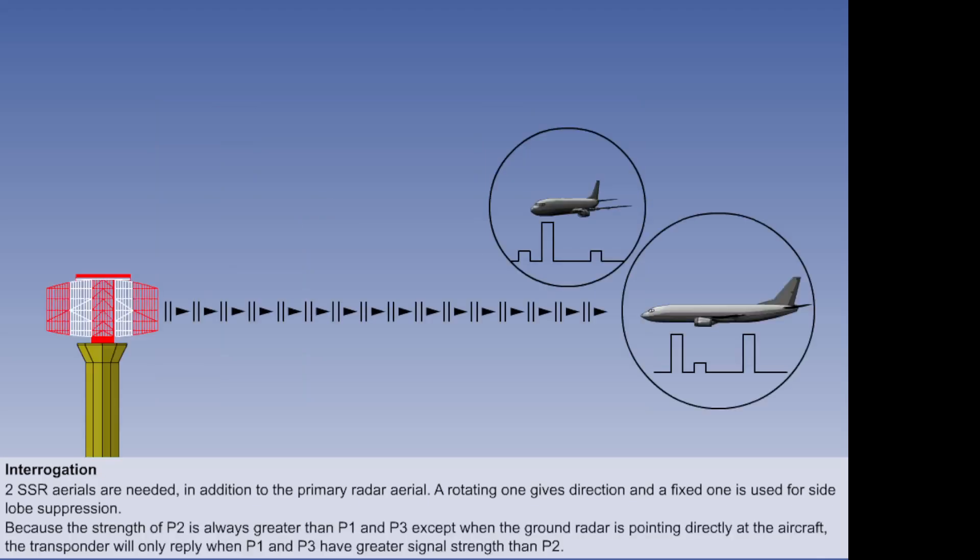The transponder, before replying to an interrogation, compares the strength of P2 to the strength of P1 and P3. If the aircraft is in a side lobe, P2 will always be stronger, and the reply will be inhibited. If the aircraft is in the main beam, P1 and P3 will be stronger than P2, and the transponder will reply. P2 is therefore referred to as the side lobe suppression pulse.